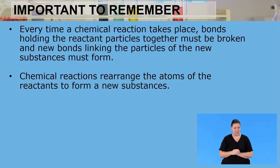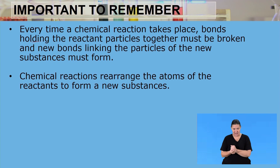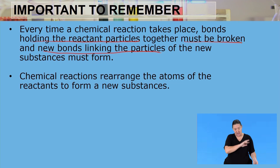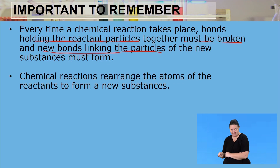What we need to take away from this lesson is that, number one, every time a chemical reaction takes place, the bonds that are holding the reactant particles together must be broken, and new bonds linking the particles of the new substance must form. When a chemical reaction takes place, the existing bonds of the reactants need to break, and new bonds need to form so that products can be produced.